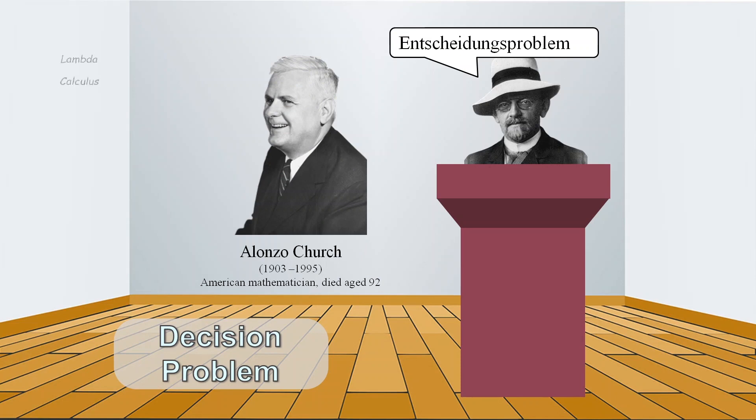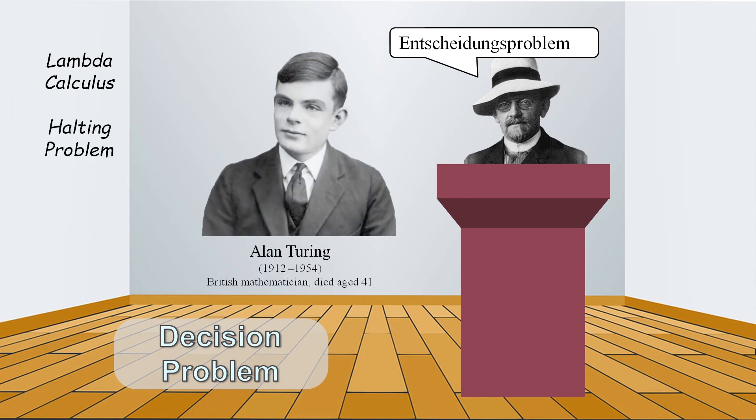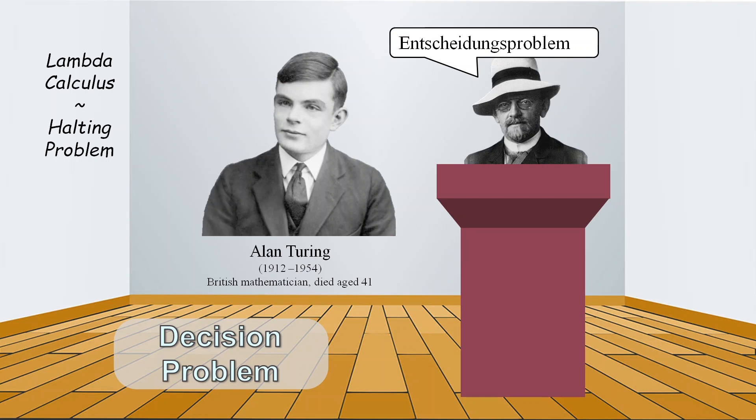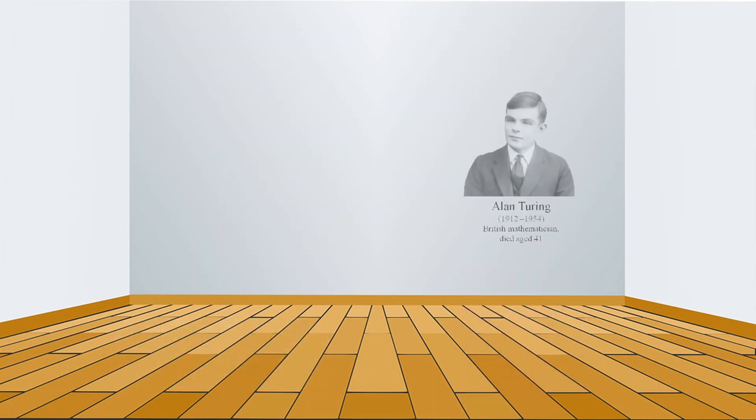The decision problem was addressed in 1936 by the American Alonso Church with lambda calculus and in the same year by Alan Turing with the halting problem. These two solutions are thought to contain equivalent logic just expressed in different forms and the underlying logic is considered to be closely related to Kurt Gödel's incompleteness theorems of 1931.